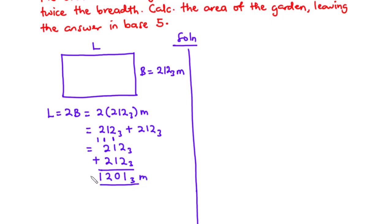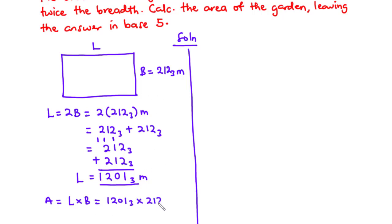Now let's find the area. The area of a rectangle is given by length times breadth. So the length is 1201 base 3 and we multiply that by the breadth, which is 212 base 3. So we need to compute 1201 base 3 times 212 base 3, still working in base 3.